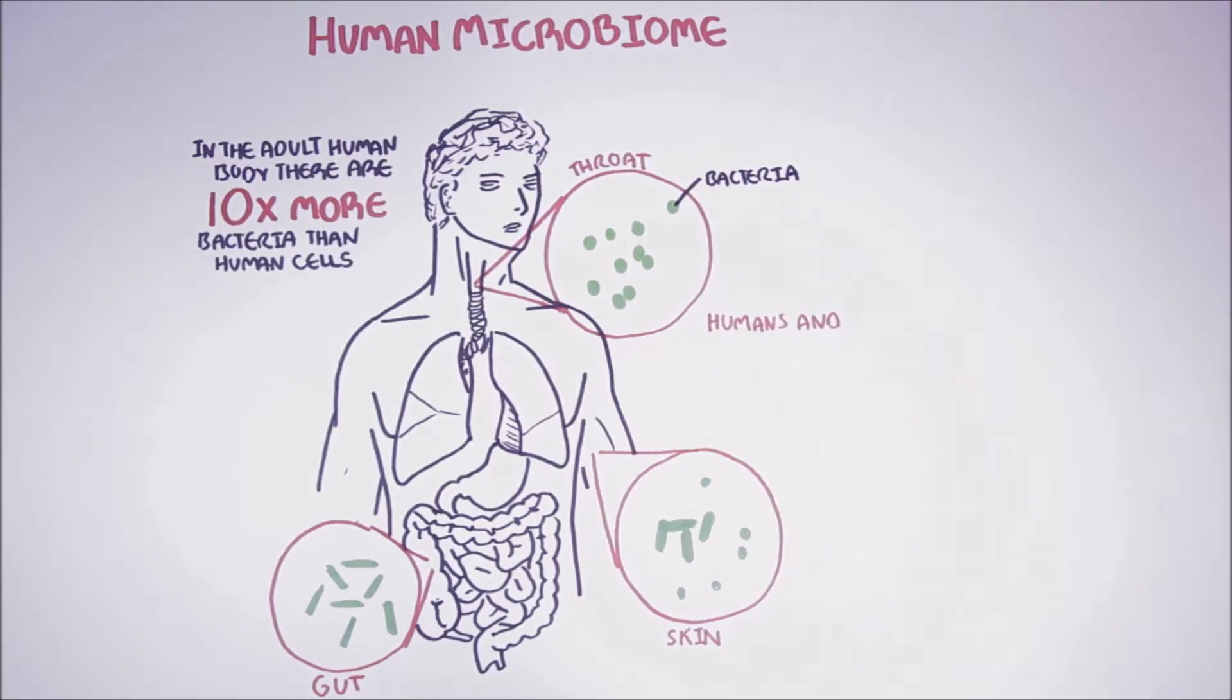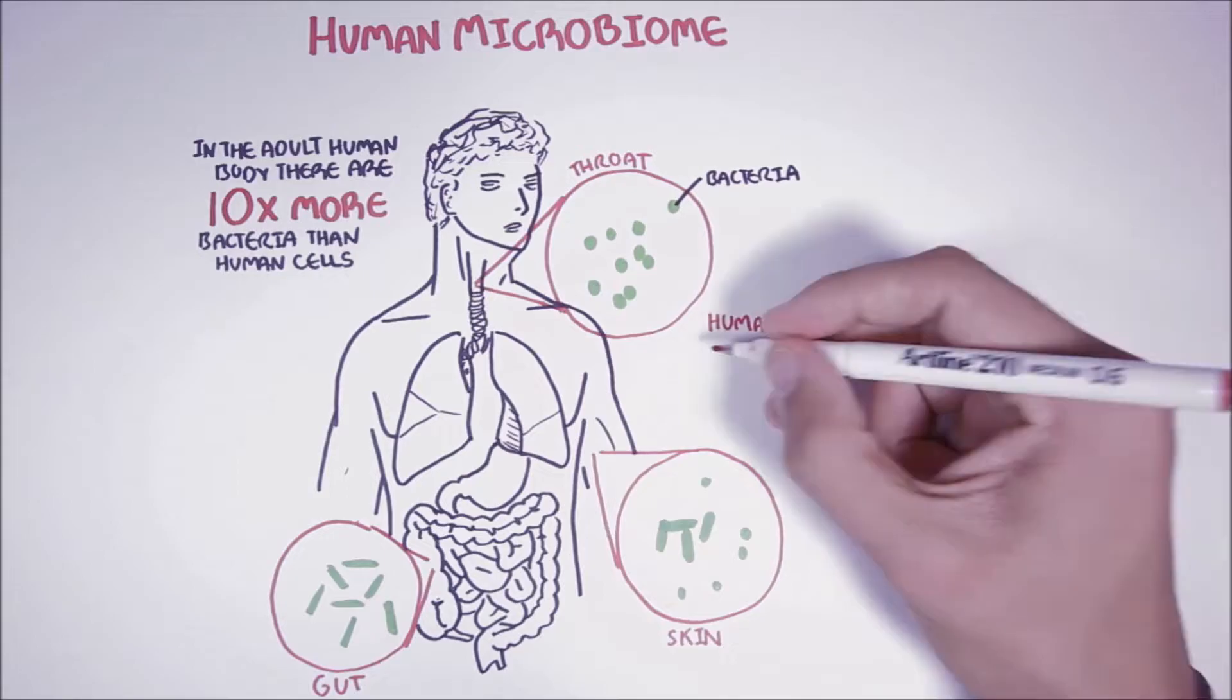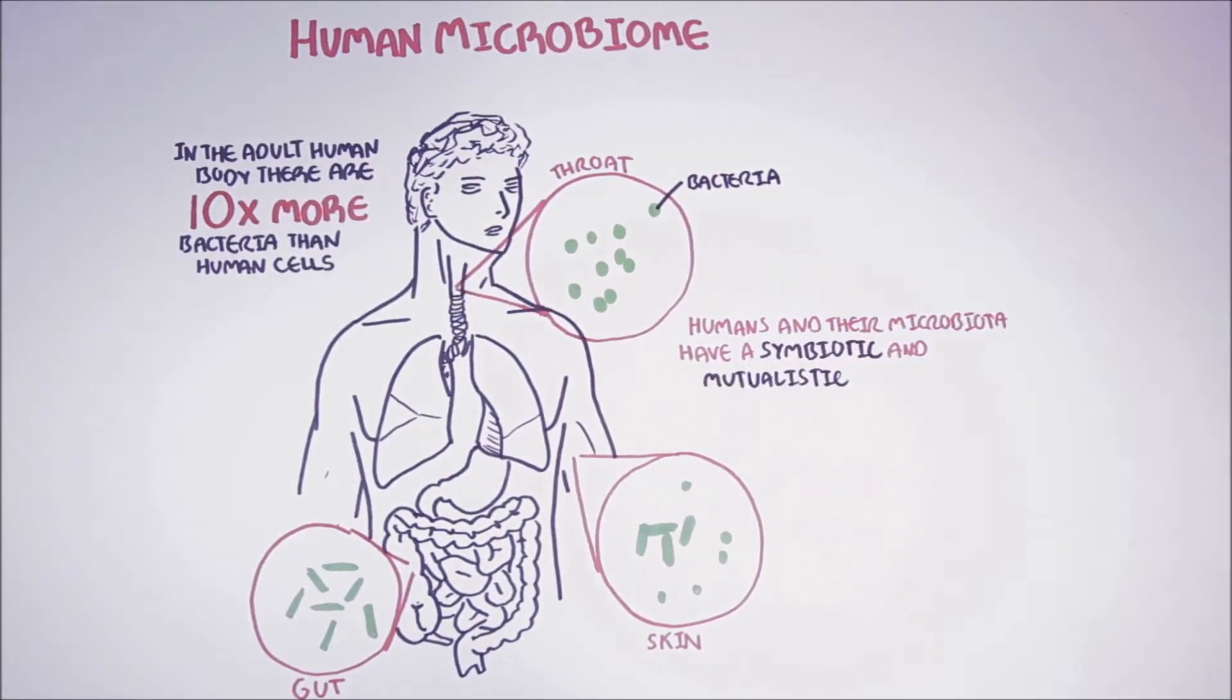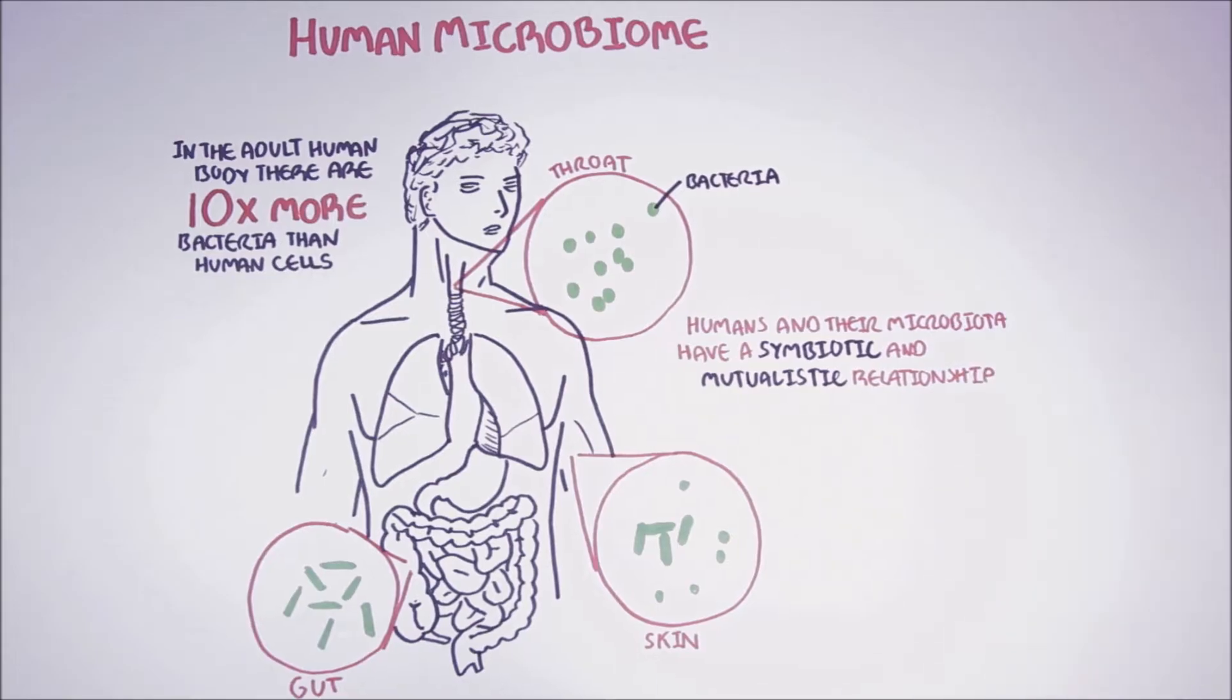Humans and their microbiota, which is bacteria, have a symbiotic and mutualistic relationship, which means that us humans and the bacteria work together, work with each other, benefit off each other, and depend on each other for survival.